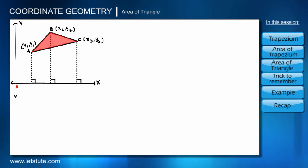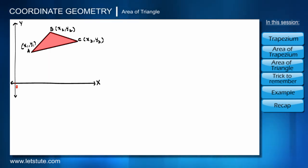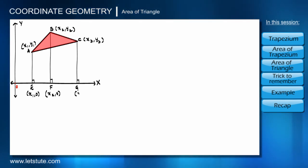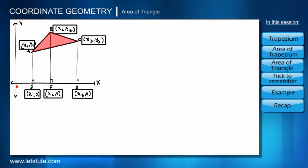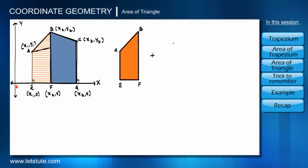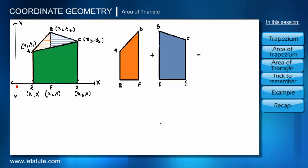Let's divide the triangle into parts using perpendiculars from the three points to simplify the process of finding the area. Drawing a perpendicular from A meets the x-axis at E, so coordinates of E are x1, 0. Similarly, perpendiculars from B and C meet the x-axis at F and G, giving coordinates x2, 0 for F and x3, 0 for G. The area of triangle ABC can be found by adding area of trapezium ABFE plus area of trapezium BCGF, then subtracting area of trapezium ACGE.